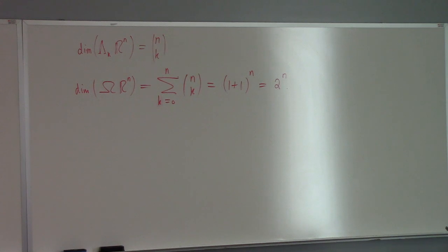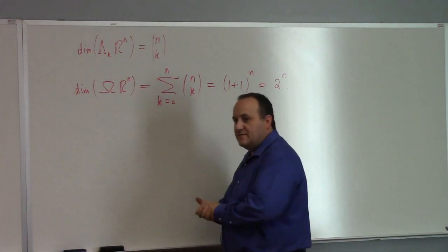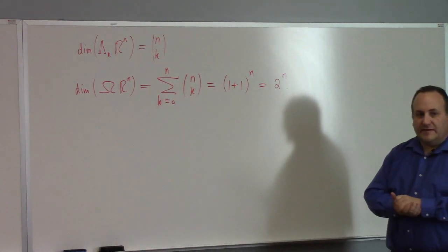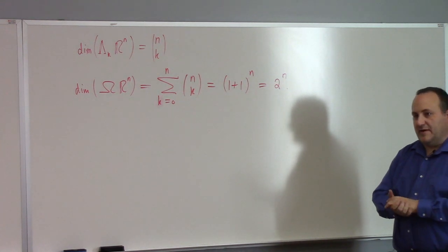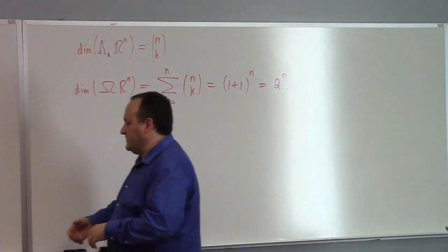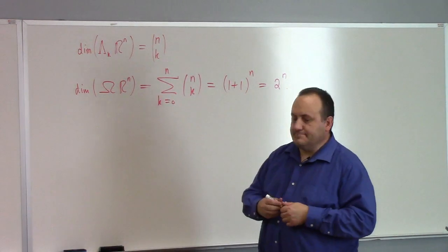This is a newfangled algebra we can build for a vector space. It's going to give us all kinds of insight into linear dependence and independence of vectors. It also gives us a way to define the determinant algebraically — we can use this algebra to define the determinant. Let's work out a calculation to show you where we're going with that.